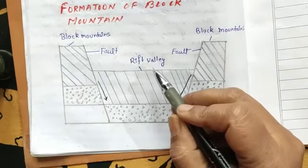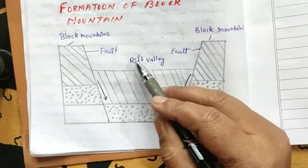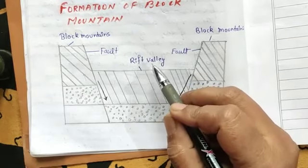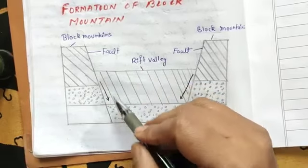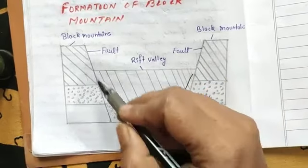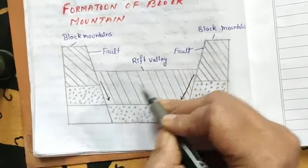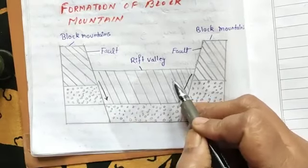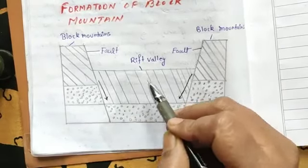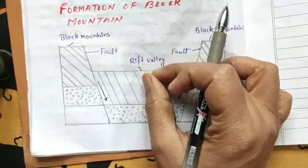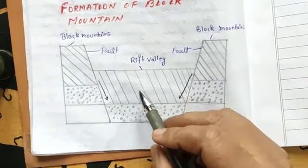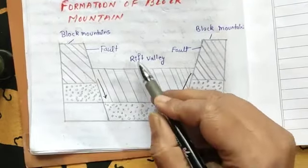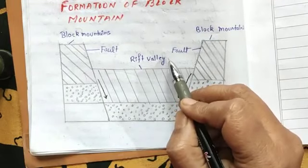There is also a rift valley associated with block mountains. As the land adjacent to the central mass continues to diverge, the central mass sinks, forming a linear depression known as a rift valley.